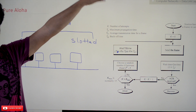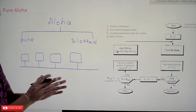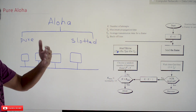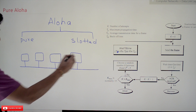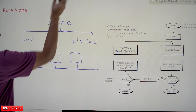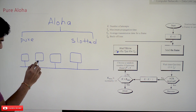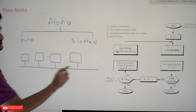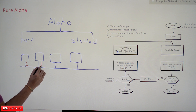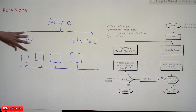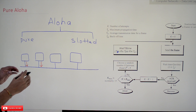Pure Aloha is a technique used in the earlier 1970s. Before understanding how Pure Aloha works, we will try to understand random access. Here we have a shared medium shared by these computers. Whenever a computer wants to transmit data, in random access, it will directly send the data onto this shared medium. If this computer wants to send data and this computer also wants to send data, both will send the data as and when they are ready to transmit.